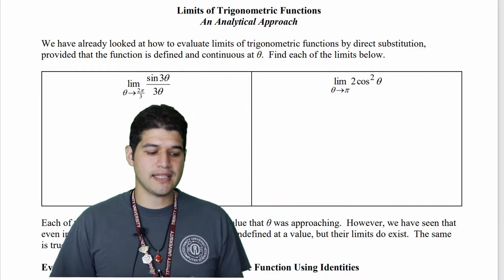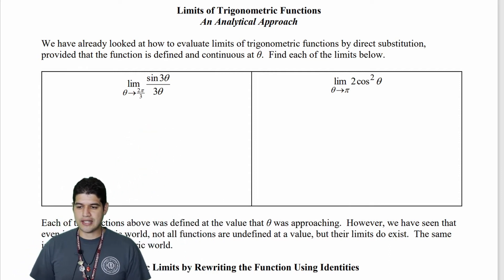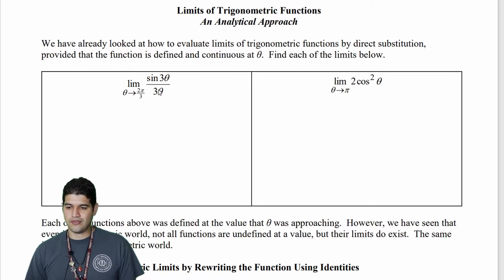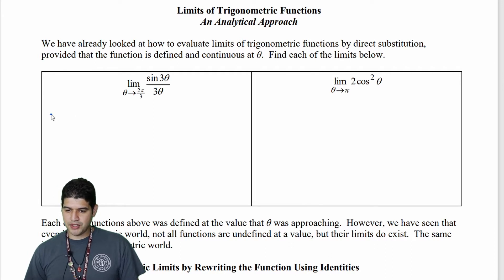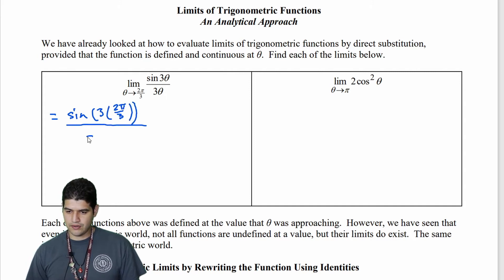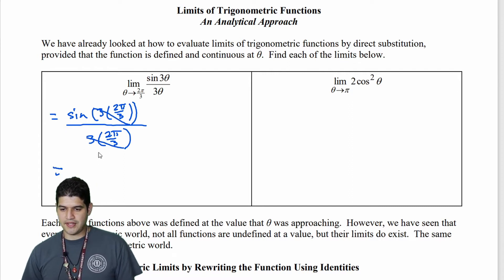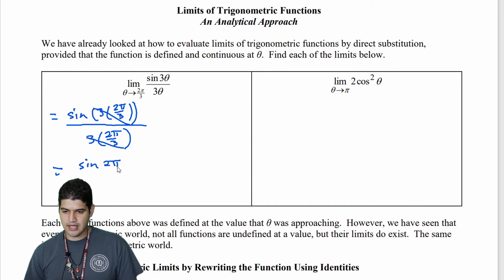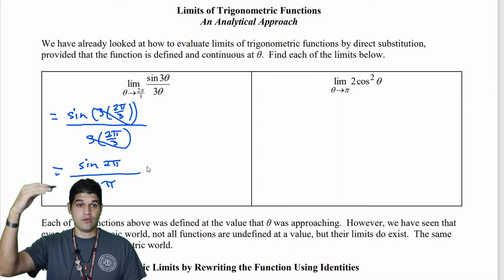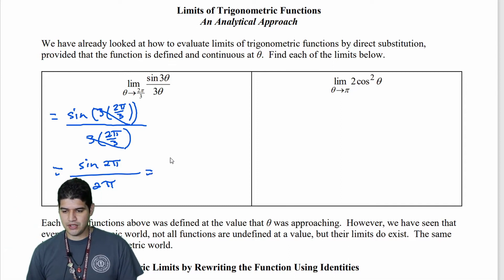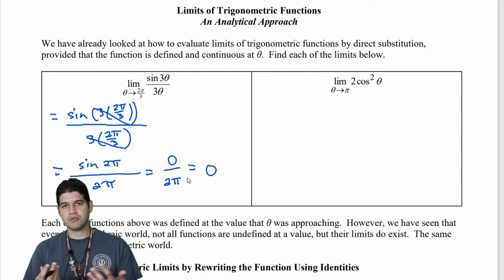We've done some direct substitution before, so let's look at these two problems. The limit as theta approaches 2π/3 of sine(3θ) over 3θ. Making the substitution, I get sine(3 · 2π/3) over 3 · 2π/3. The 3s divide out, giving sine(2π) over 2π. Sine of 2π is 0 — that's one full rotation around the unit circle — so I get 0 over 2π, which equals 0. Direct substitution works.